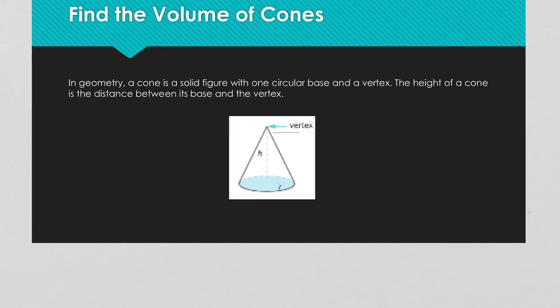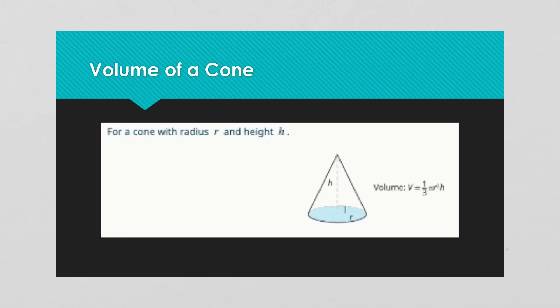This is an upside-down cone, so the vertex is at the top. The height of the cone is from the dead center of the base up to the top of the vertex. The formula for the volume of a cone is 1/3 × π × r² × h.